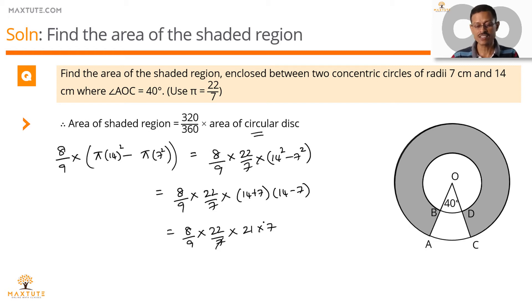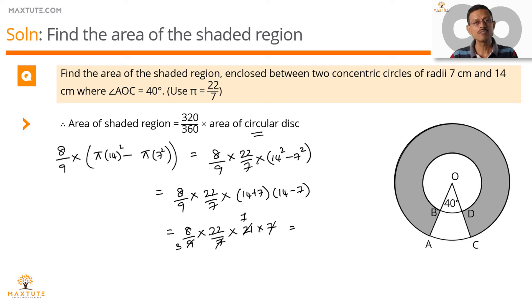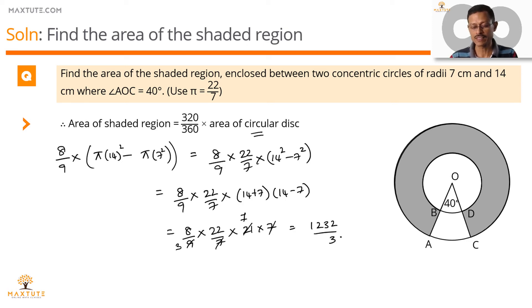The 7 in the numerator and denominator cancel. We have 21 as 3 times 7 and 9 as 3 times 3. After cancellation, we get 8 into 7 which is 56, multiplied by 22, giving 112 plus 1120, resulting in 1232 divided by 3 square centimeters. This is the area of the shaded region.